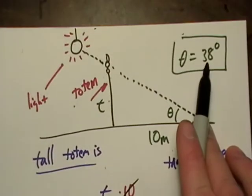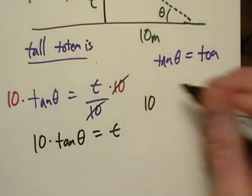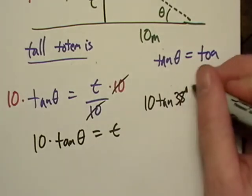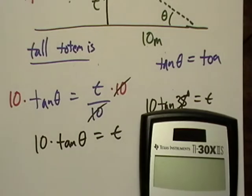Well, theta is 38 degrees. So, let's just go ahead and write 10 tangent of 38 degrees equals T. So, I'm just going to type it into my calculator. Tangent of 38 degrees. What's that equal to?